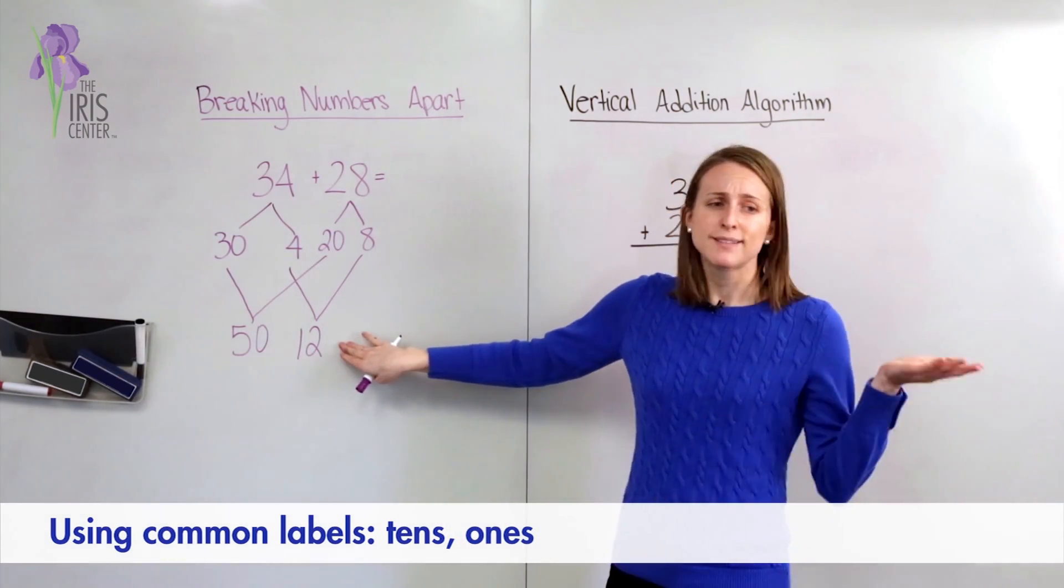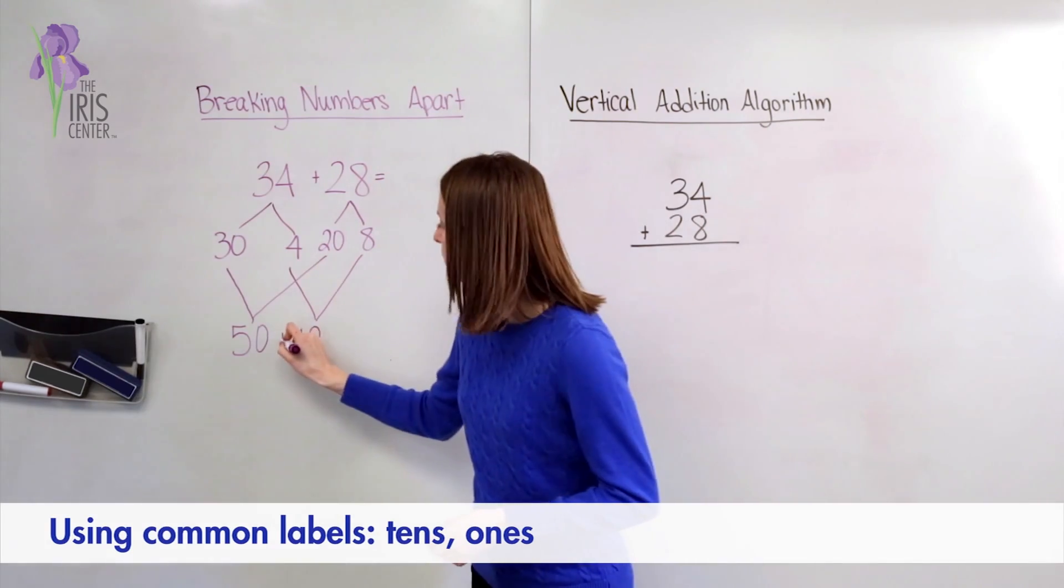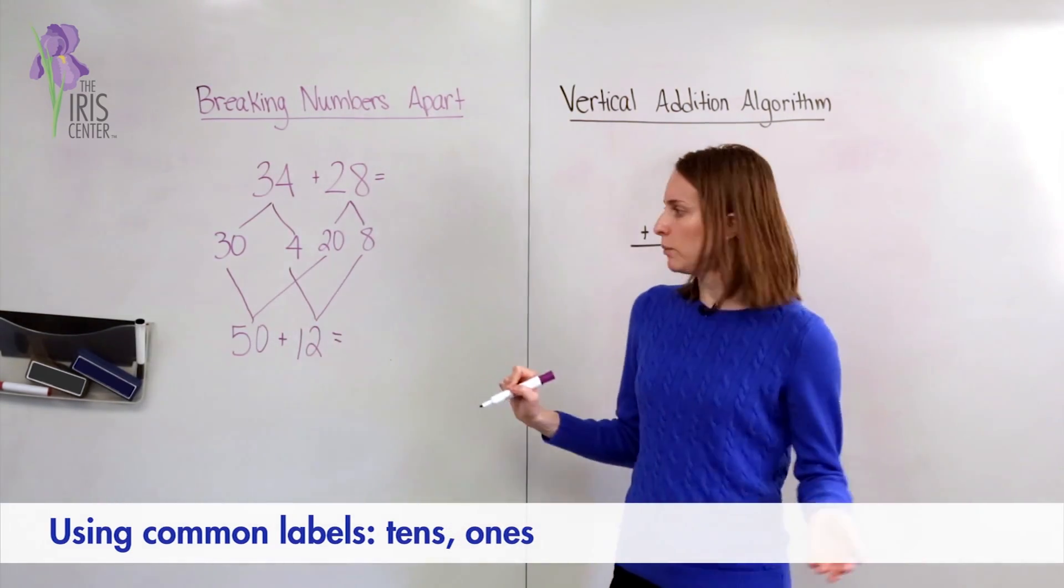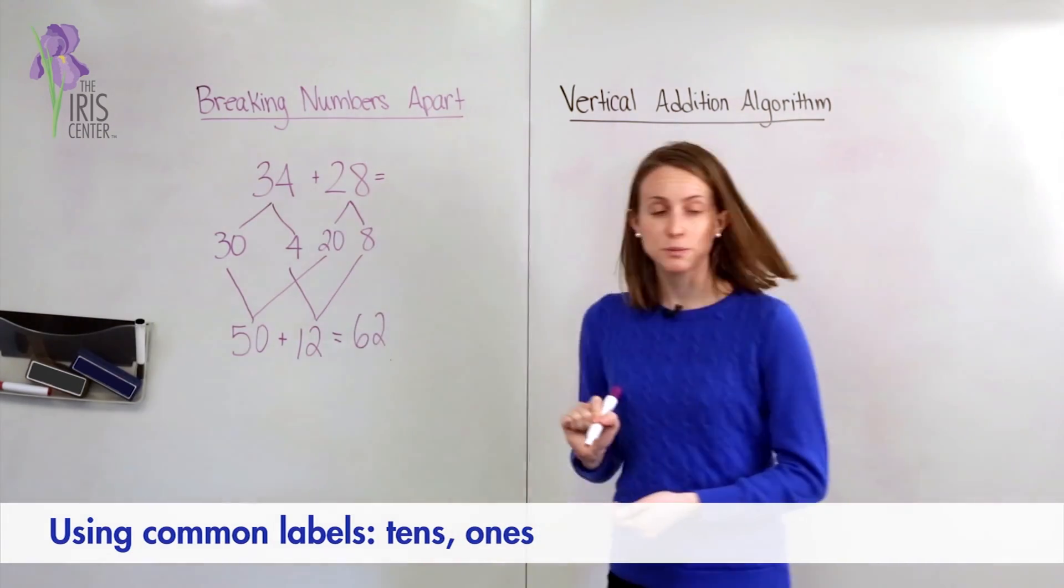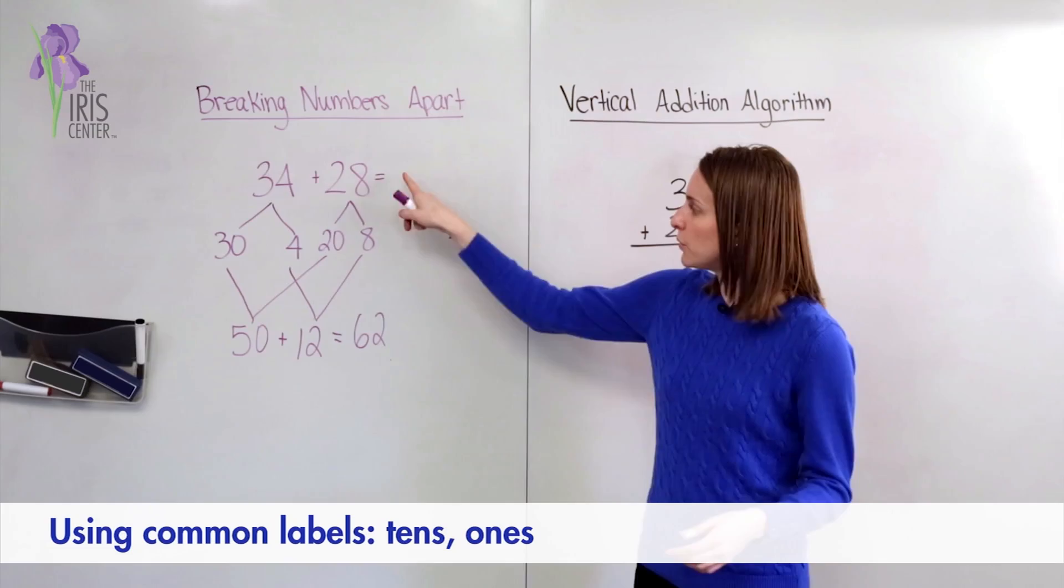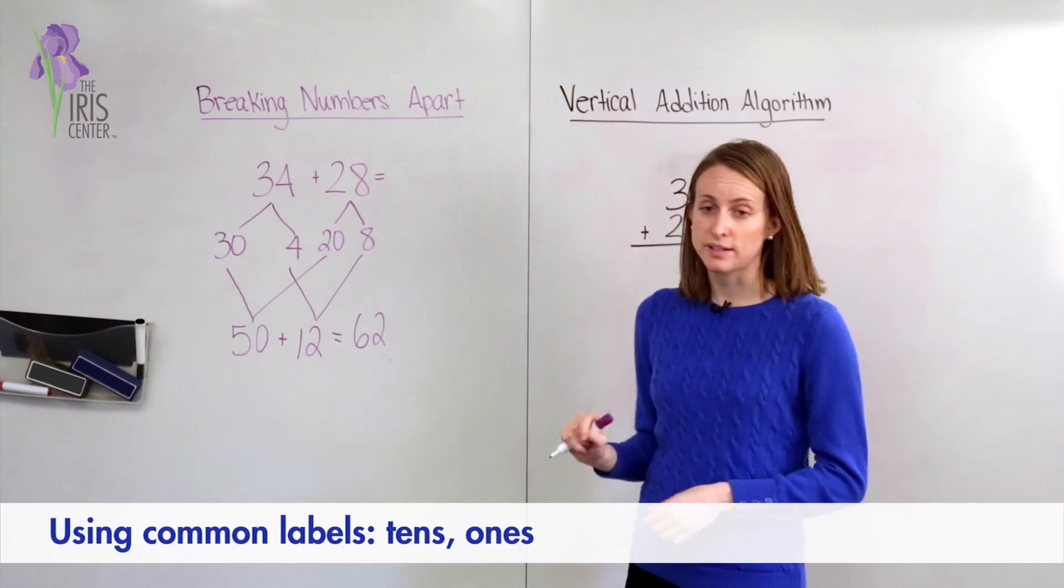So once we're here, the last step is easy. All you do is add the numbers together. And we know that 50 plus 12 equals 62. So 34 plus 28 equals 62 over here.